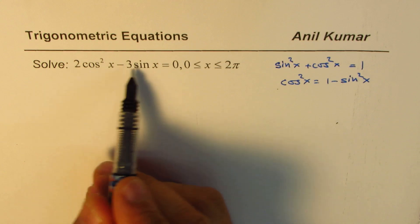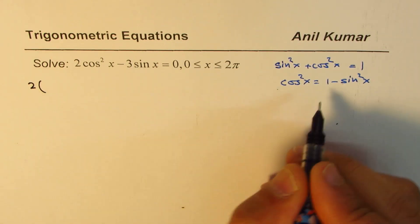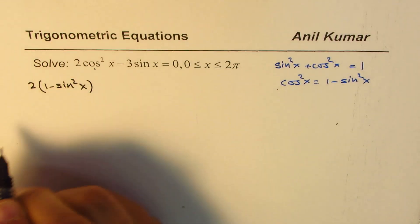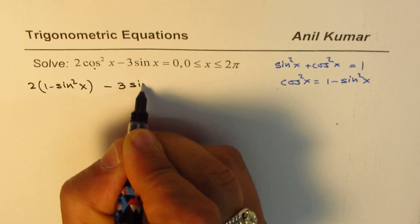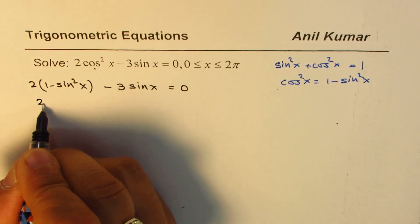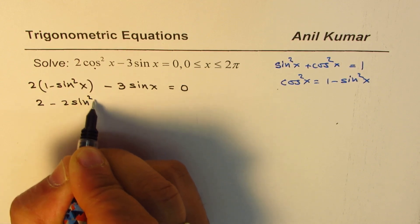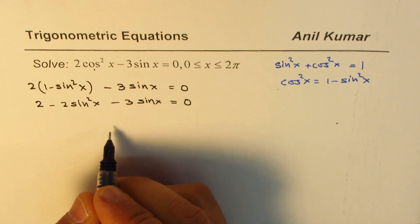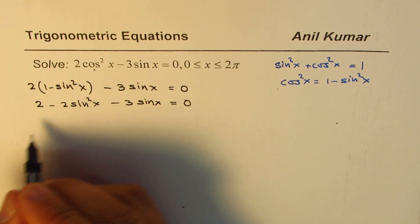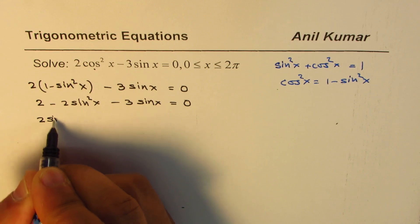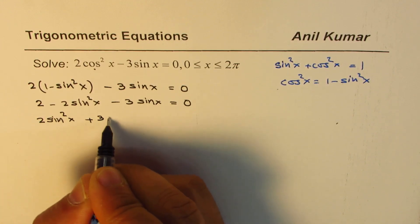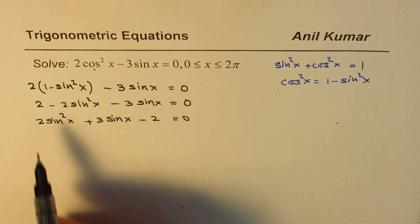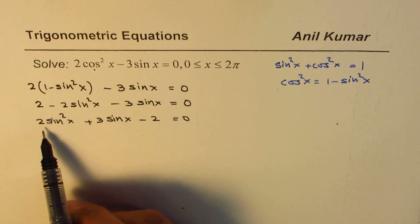Substituting this value in the equation, we get 2 times (1 minus sin²x) for cos²x, minus 3sinx equals 0. Opening the bracket, we get 2 minus 2sin²x minus 3sinx equals 0. Multiplying everything by negative 1, we get 2sin²x plus 3sinx minus 2 equals 0. I always prefer to keep the leading coefficient positive.